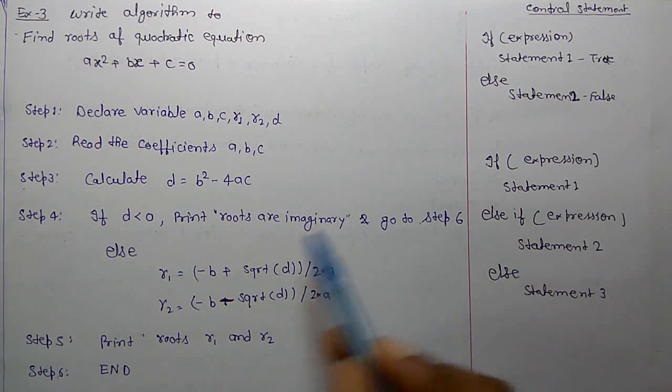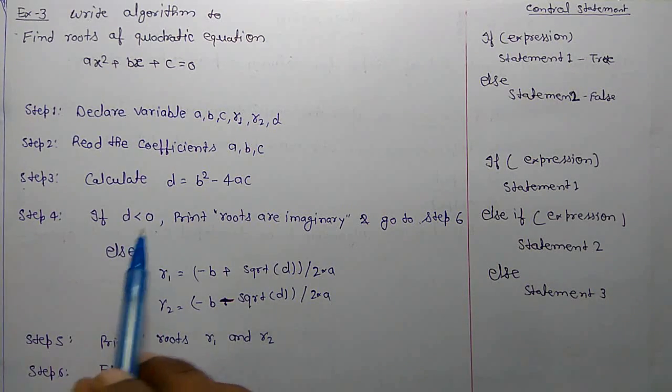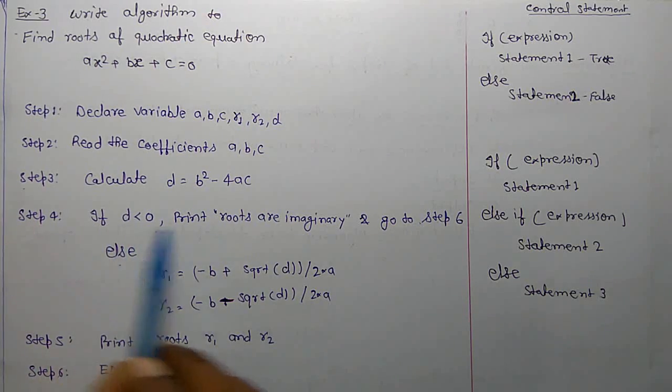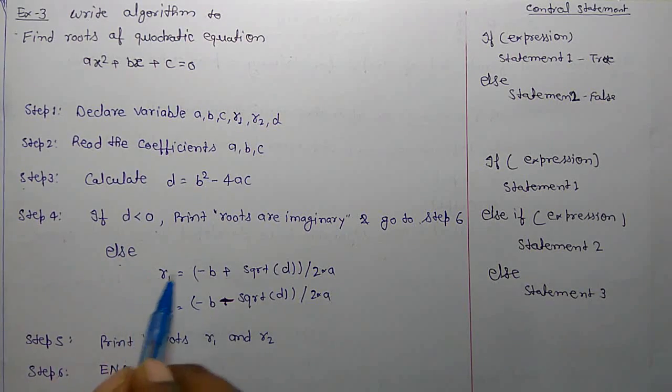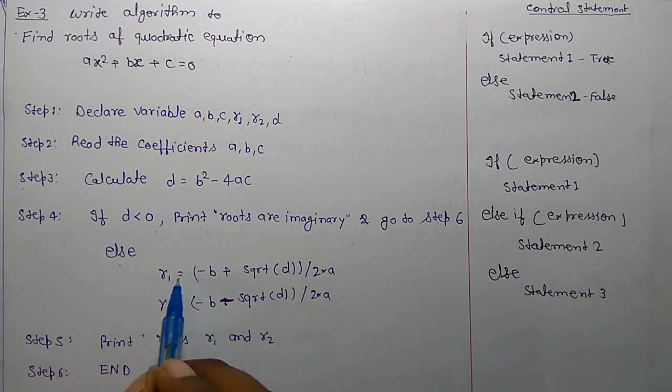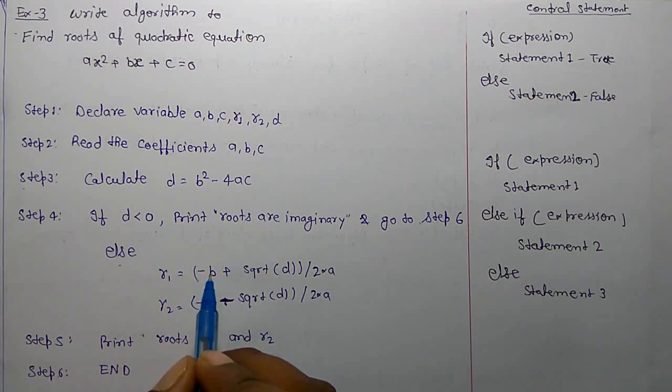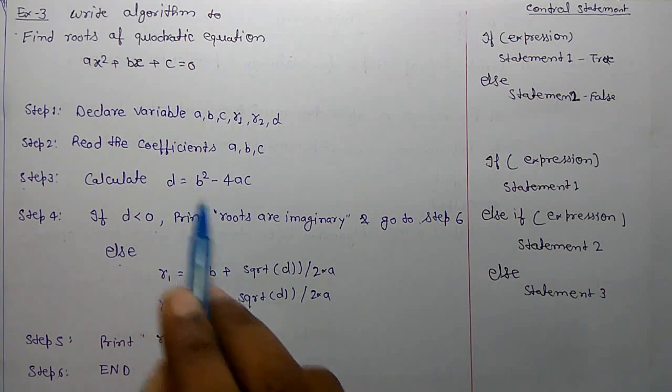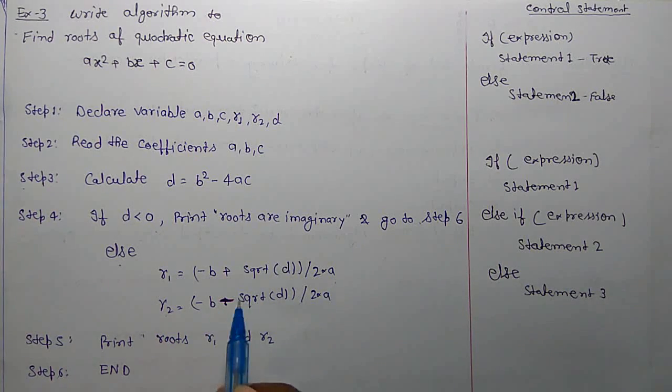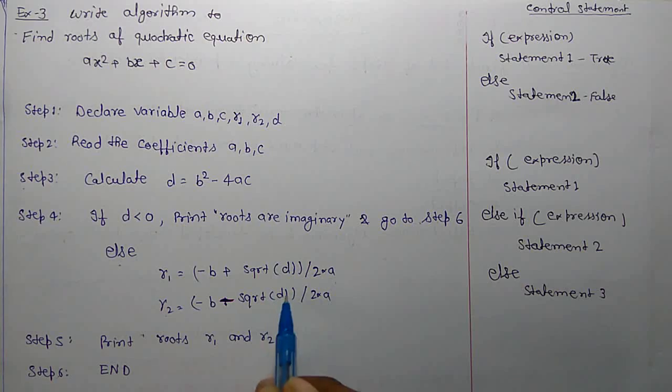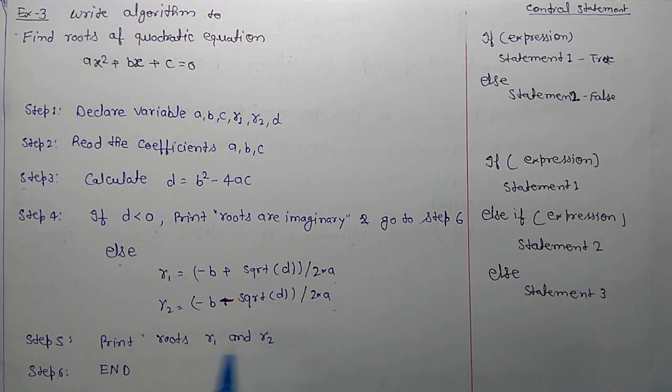So go to statement performs this way: it directly jumps. If this condition does not hold, if it is false, then it will go to else. r1 is the first root equal to minus b plus square root of d, whole divide by 2a. And r2, similarly. Print roots r1 and r2. Now end. So this is the algorithm for finding roots of quadratic equation.